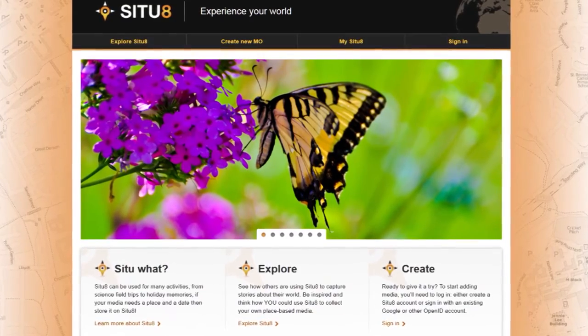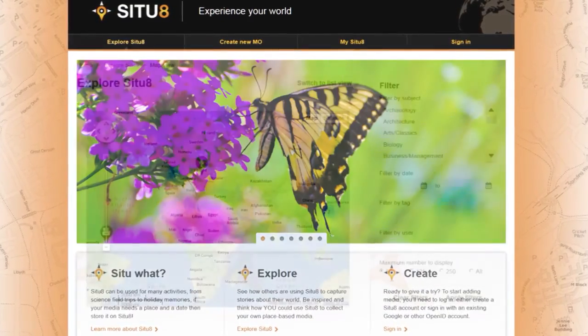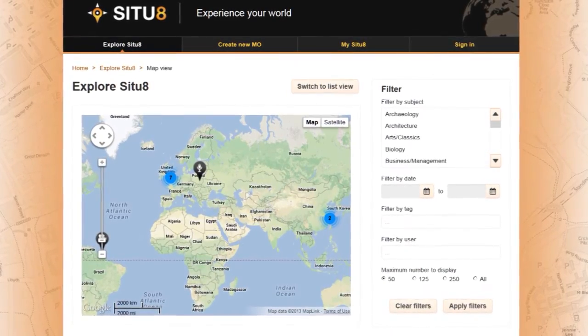Situ8 is a tool for collecting and sharing geo-tagged field data in outdoor environments.